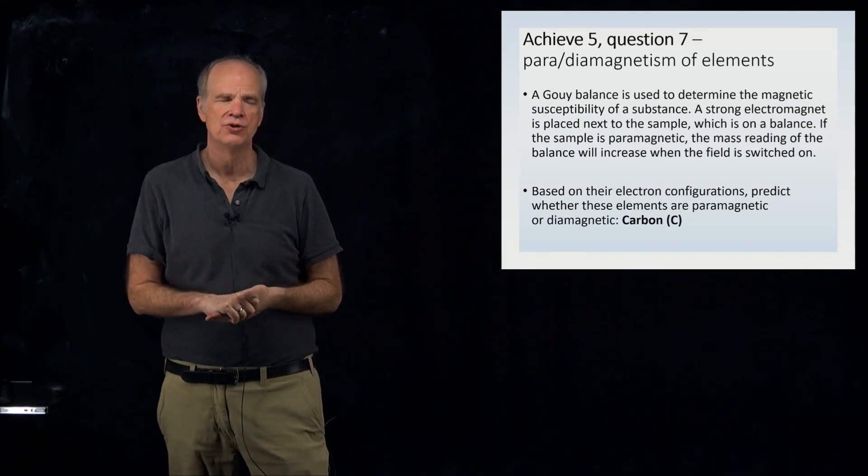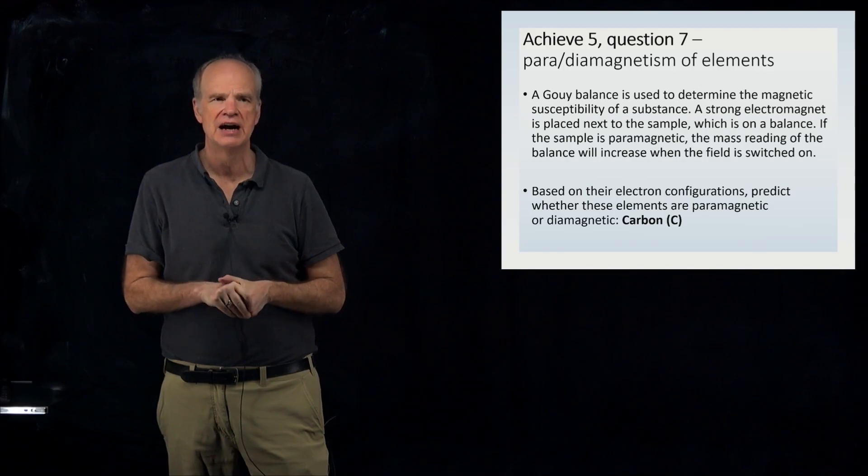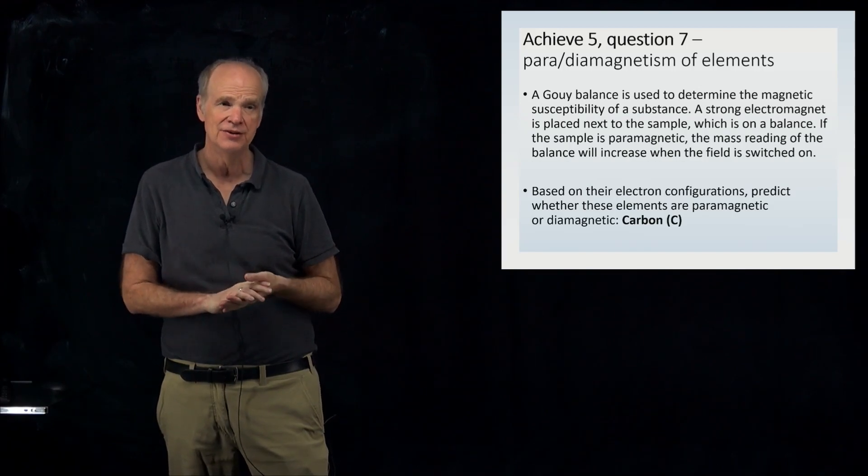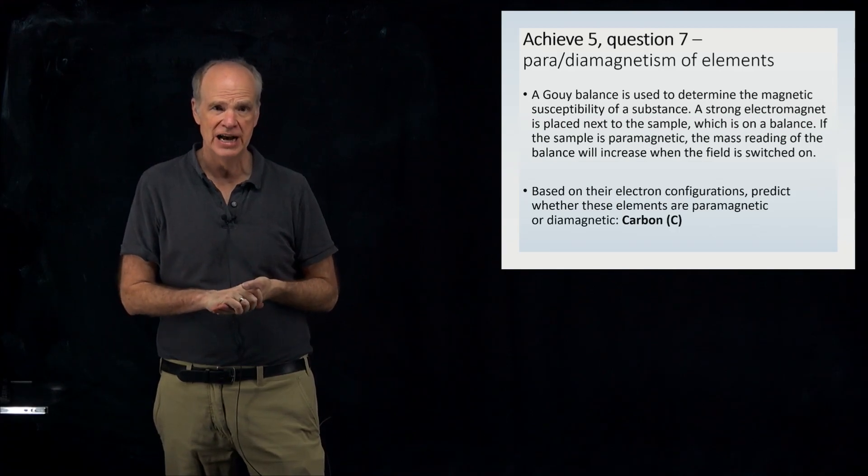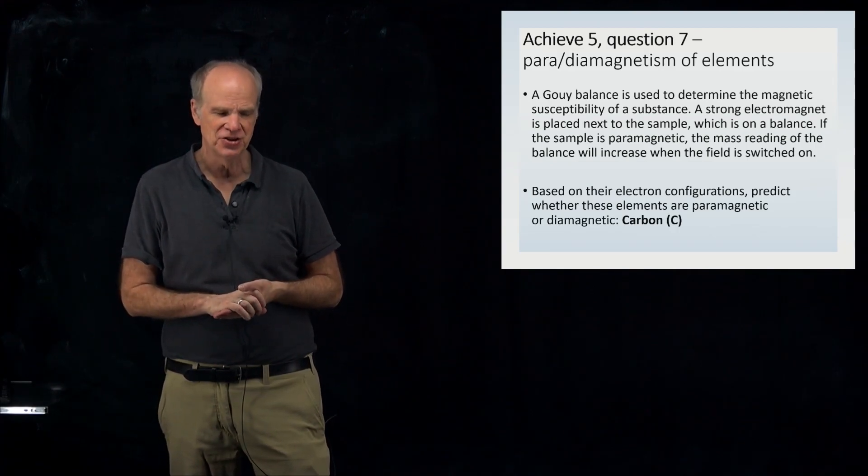So all they really want you to do is figure out whether an element which is neutral is going to be a paramagnetic or diamagnetic element. That's actually pretty easy to do.